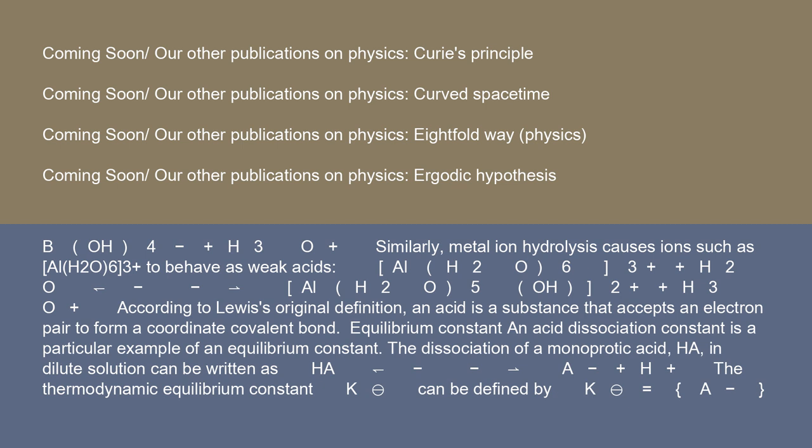According to Lewis's original definition, an acid is a substance that accepts an electron pair to form a coordinate covalent bond. Equilibrium constant: an acid dissociation constant is a particular example of an equilibrium constant.